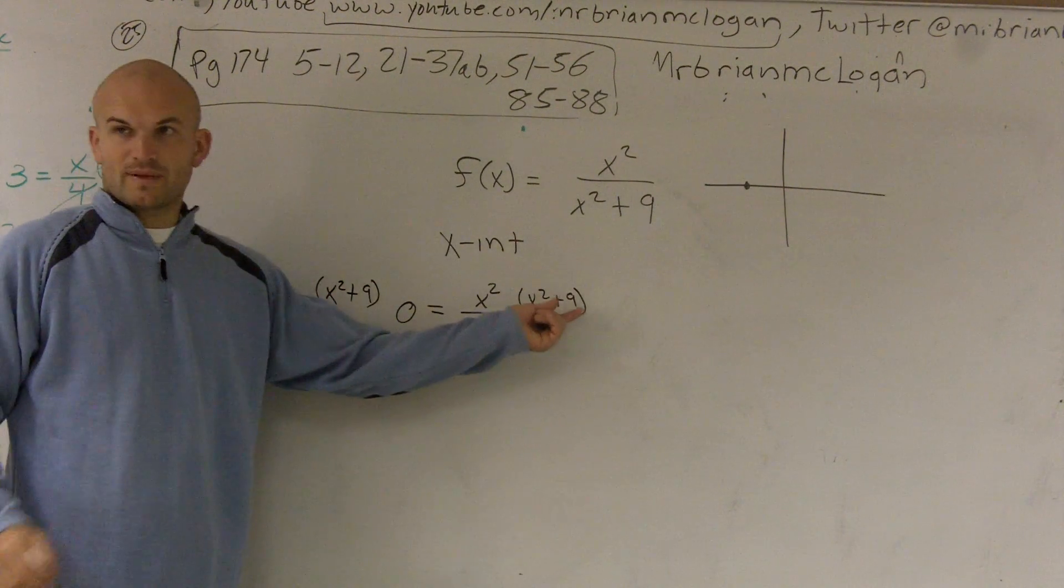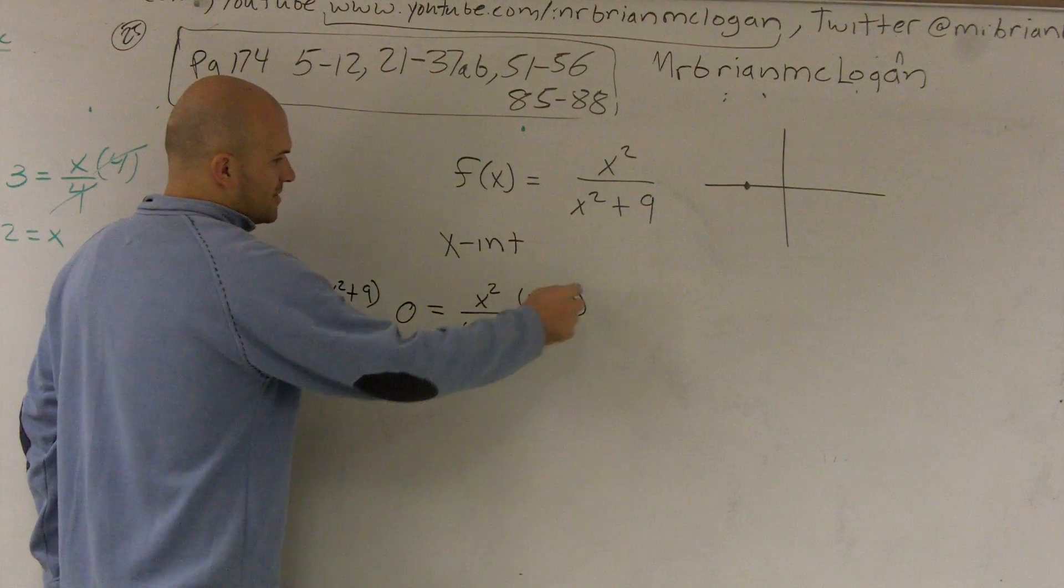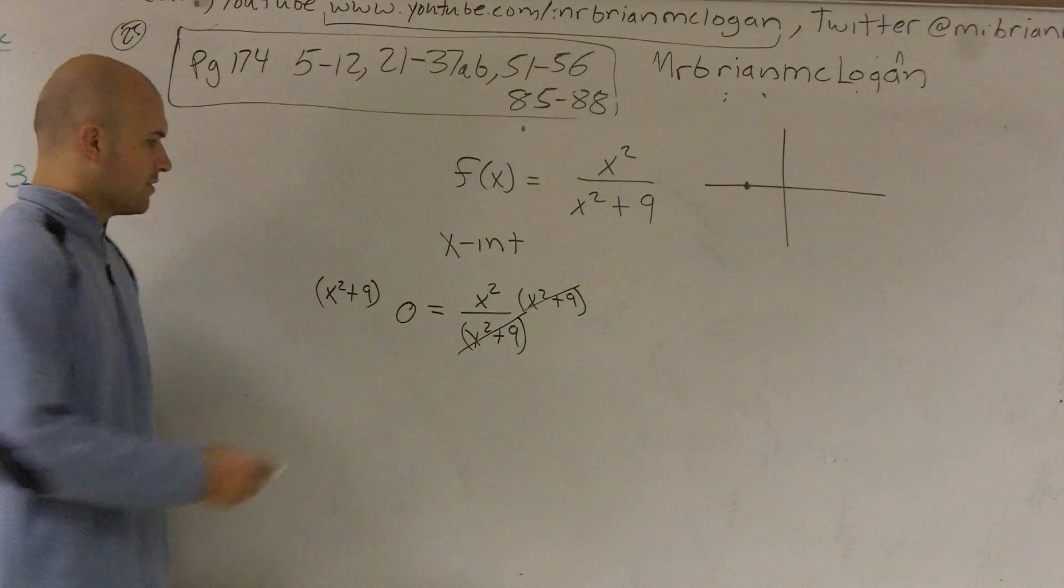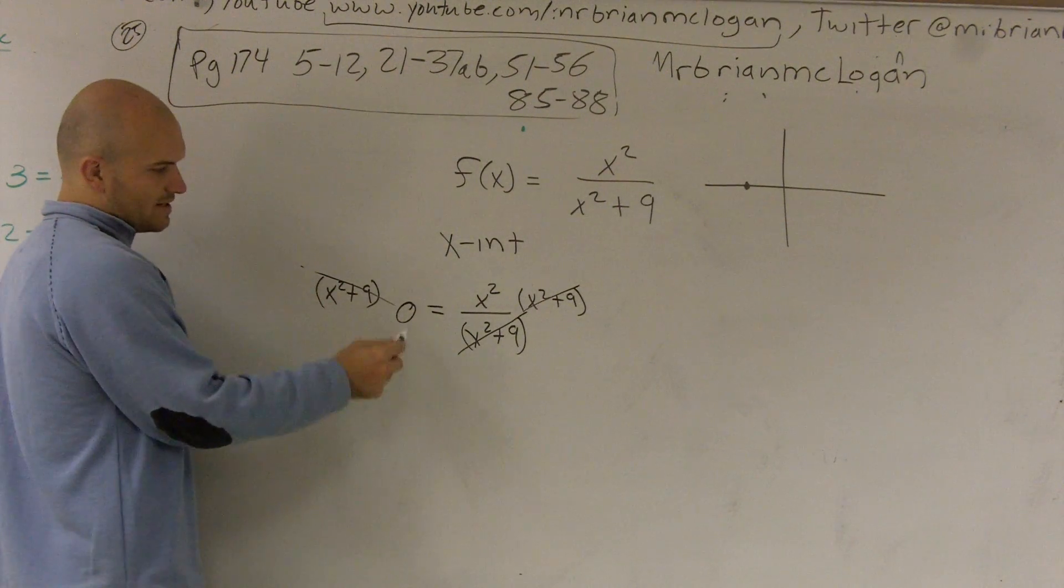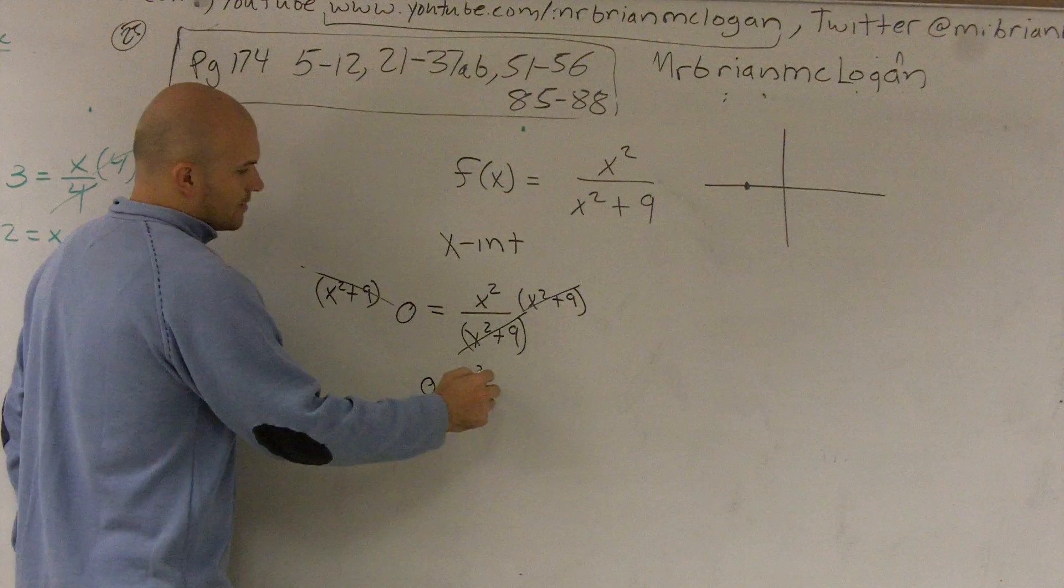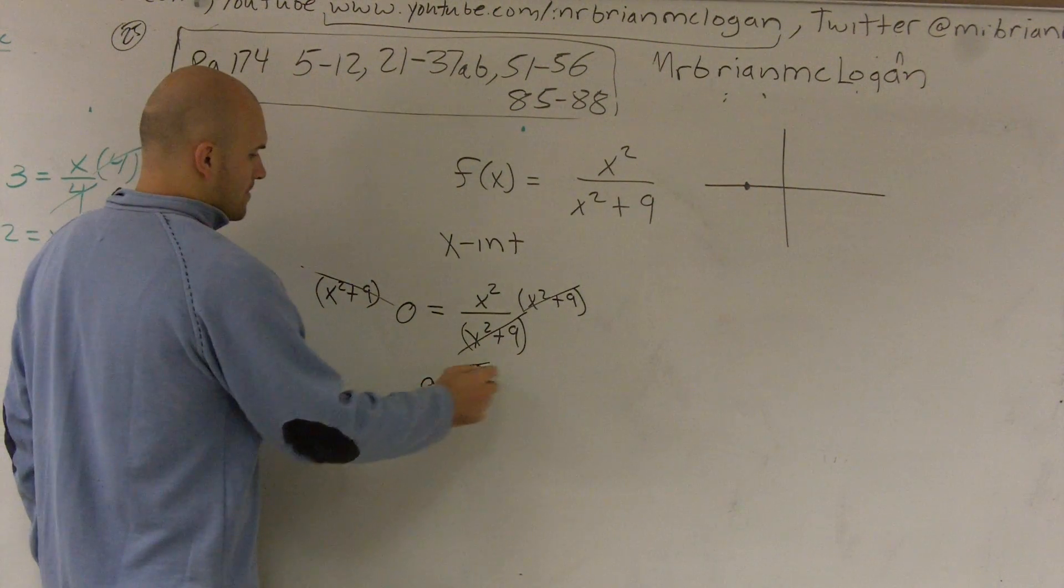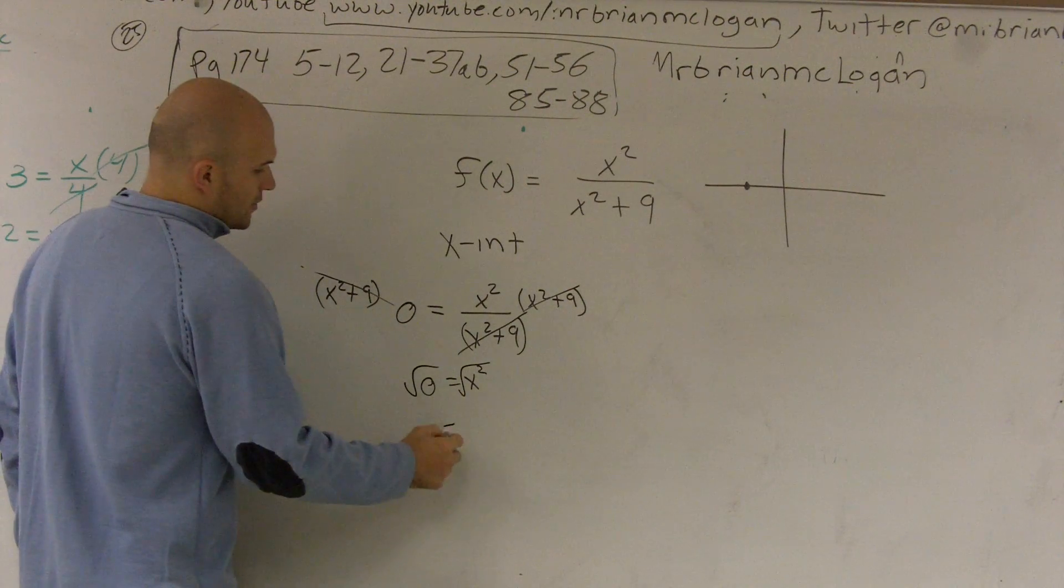Well, x squared plus 9 divided by x squared plus 9, these are going to cancel out to leave me 1. So therefore, this times 0 gives me 0, so I'm left with 0 equals x squared. Take the square root. 0 equals x.